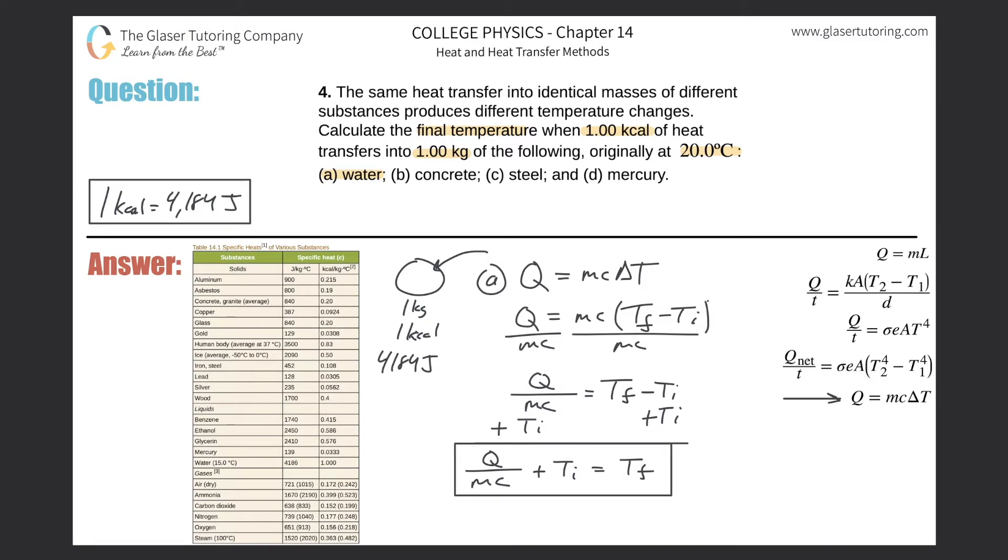Now I'm just going to plug it in. So for water here, the heat, again, is 4,184. The mass is going to be one kilogram. And now the specific heat of that water is going to be found on the table.